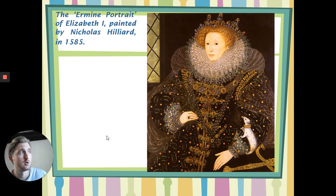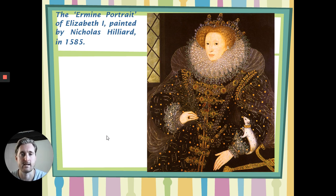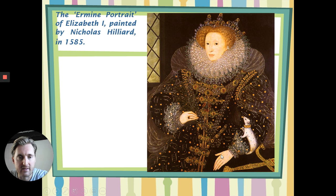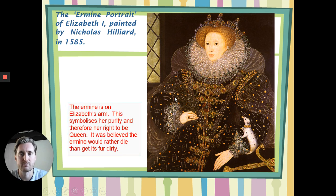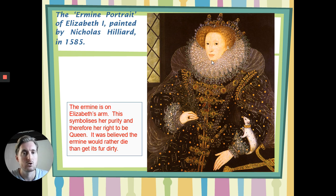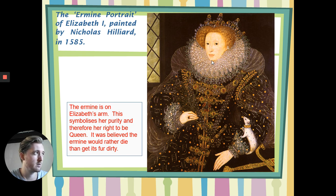We can look at this one next. It's called the Ermine portrait of Elizabeth, and it was painted in 1585. She's seen as quite a broad, powerful figure — she's got lots of jewels on and she's got this ermine-like figure here, and there's a sword at the bottom. The ermine is on Elizabeth's arm. The ermine again symbolises purity and her right to be queen — very similar to the pearls in the previous picture. And it was believed that the ermine would rather die than get its fur dirty. That's kind of how Elizabeth wanted to be portrayed — she would rather die than let her country be harmed.